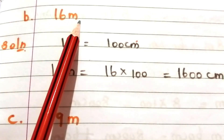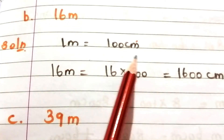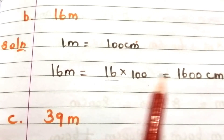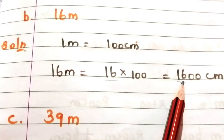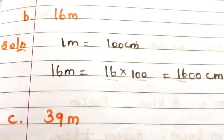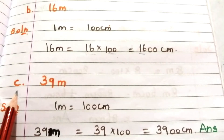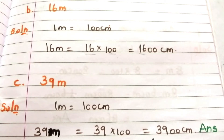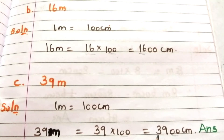Problem B: 16 meters. 1 meter equals 100 centimeters, therefore 16 meters equals 16 × 100 = 1600 centimeters. Problem C: 39 meters. We know 1 meter equals 100 centimeters, therefore 39 meters equals 39 × 100 = 3900 centimeters.